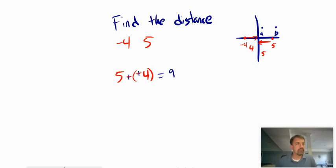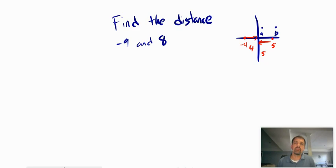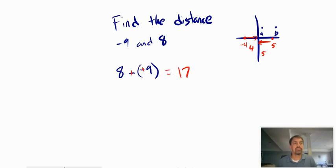Let's try another one for practice. What's the distance between negative 9 and 8? I can't do negative 9 minus 8 because that gives a negative number and distance is always positive. So I'm going to do 8 minus negative 9. I can't subtract a negative, so I'm going to add its opposite. That gives me 8 plus 9, which is 17. So the distance between negative 9 and 8 is 17 units.